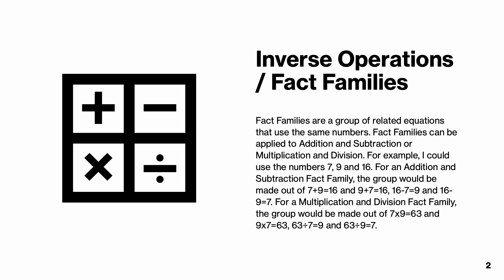For multiplication and division fact family, the group would be made out of 7 times 9 equals 63 and 9 times 7 equals 63. 63 divided by 7 equals 9 and 63 divided by 9 equals 7.